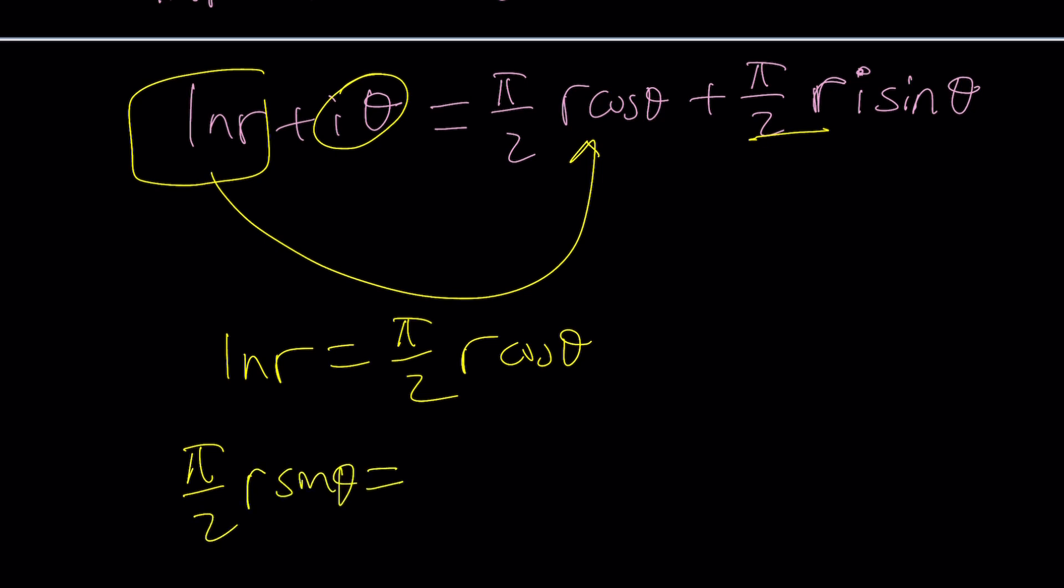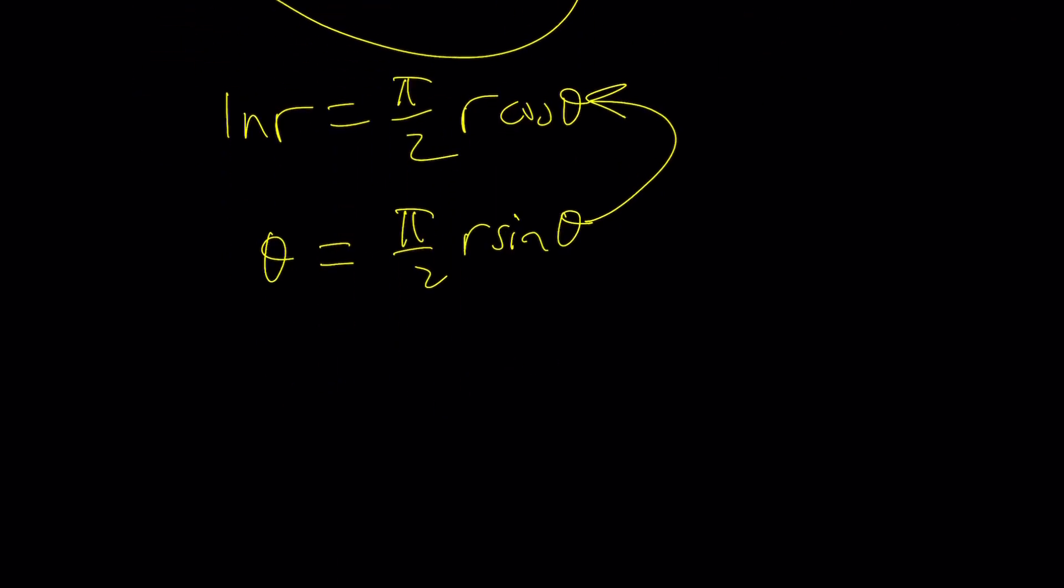π over 2R sine θ is going to equal, you know what, I'm going to write it the other way around because I'd like to divide these equations, but I could probably do that. Anyways, it doesn't matter. So, I'm going to do θ equals π over 2R sine θ, and then what we could do is we could divide this by that.